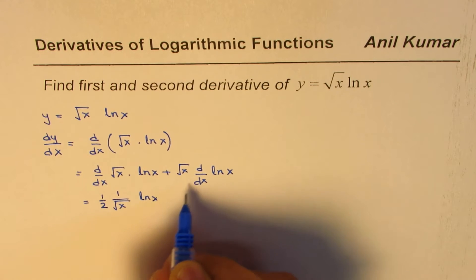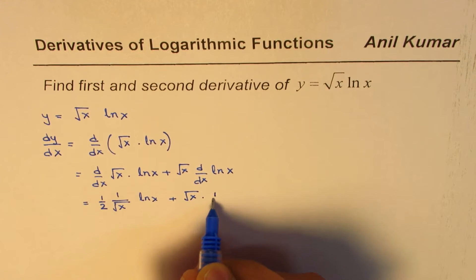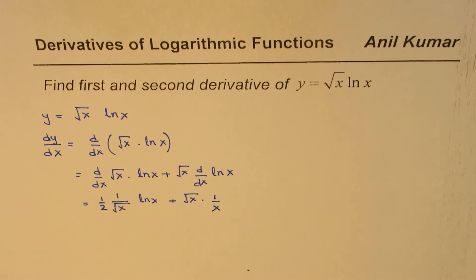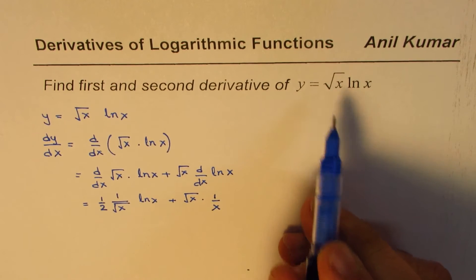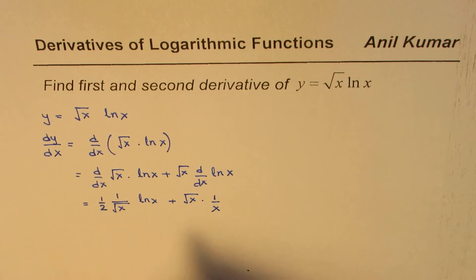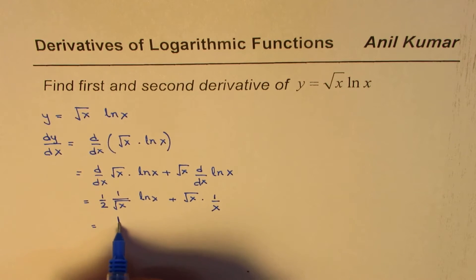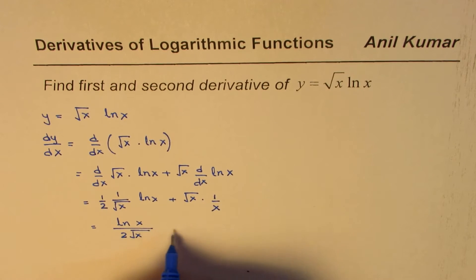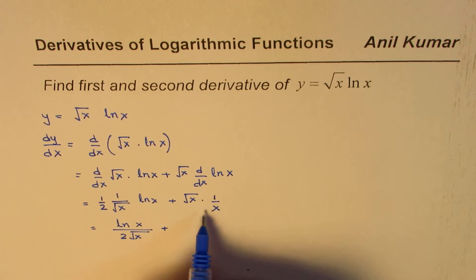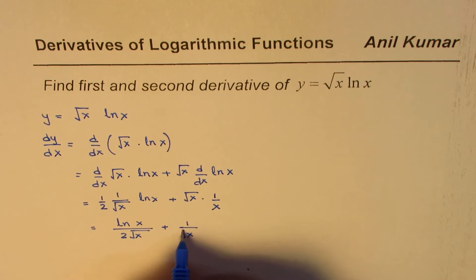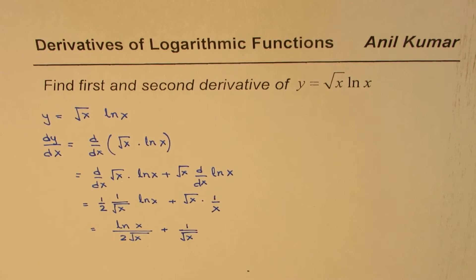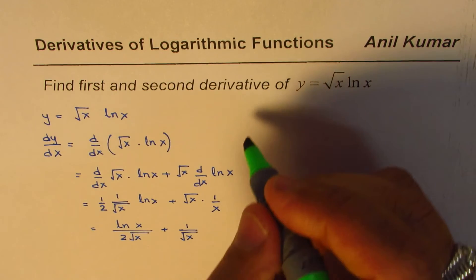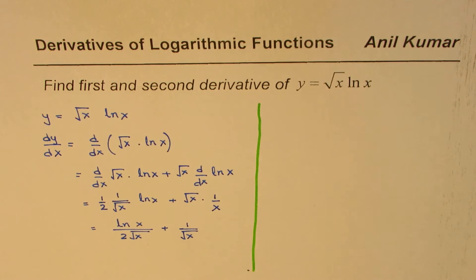So we get: 1 over square root x times ln x, plus square root x times the derivative of ln x, which is 1 over x. Now since we need to find the second derivative, it's a good idea to simplify this expression. We can write this as ln x divided by 2 square root x, plus square root x times 1 over x, which simplifies to 1 over square root x. That becomes the first derivative.